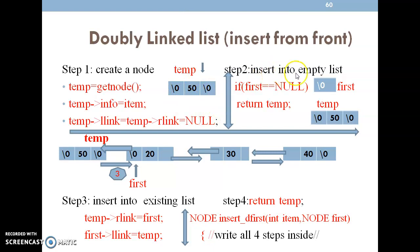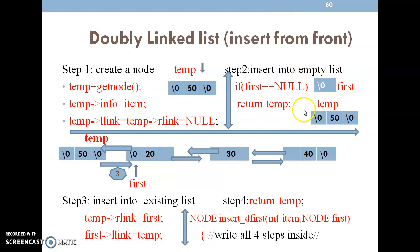Step 2 — insert into an empty list. If we are inserting a node but the list is empty, we check: if the first variable is equal to null, that indicates the list is empty. Then return temp, meaning the temp node we just created is the only node the list contains. So initially, if first is null, temp will be added to the list.